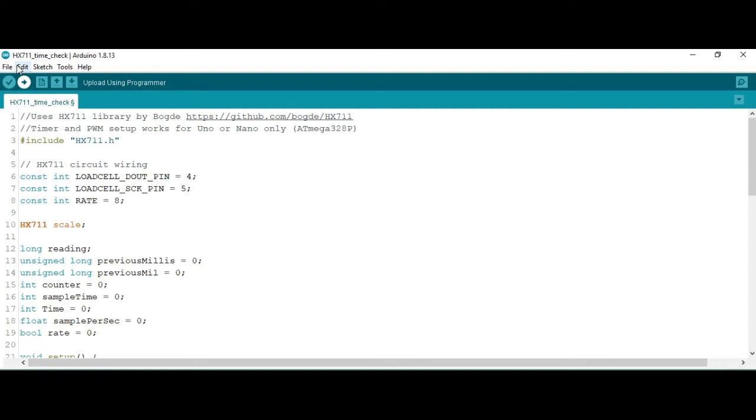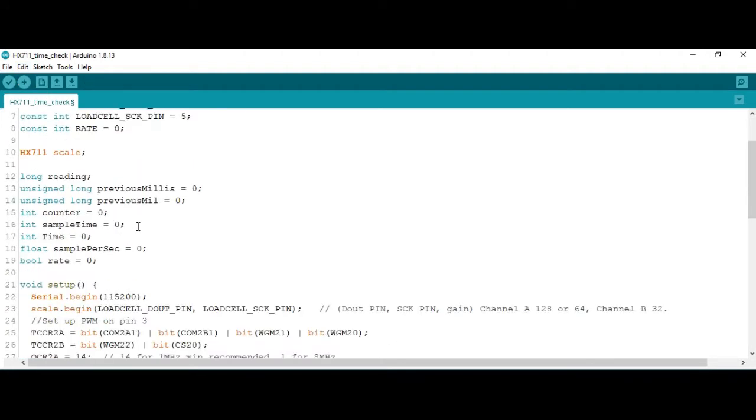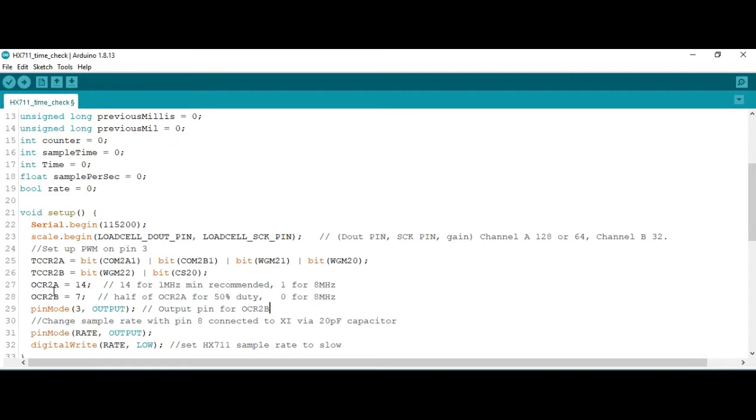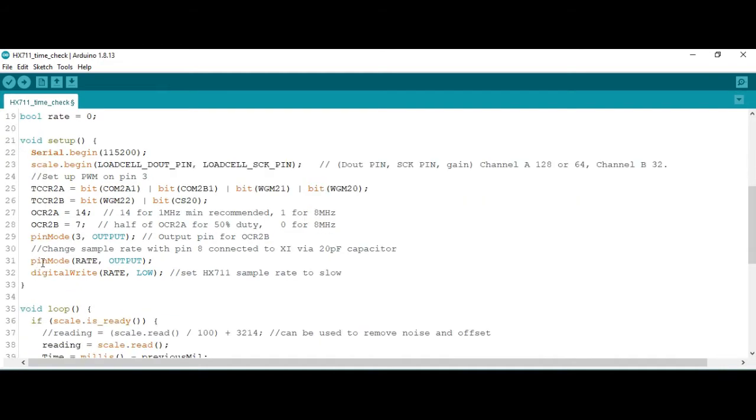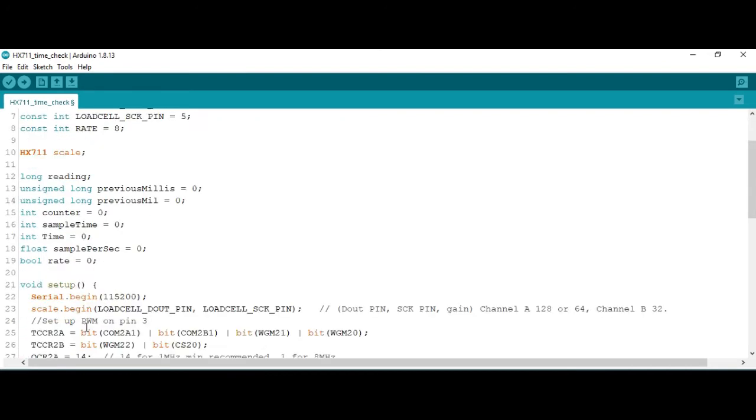I created this code for measuring the sample rate. I will try leaving it in the description where you could just copy it from and paste it into the Arduino IDE and that should work. This code also puts out a PWM signal which is this bit here to pin 3 and also puts a high or low onto pin 8 as well. You could change that to another pin if you wanted to.